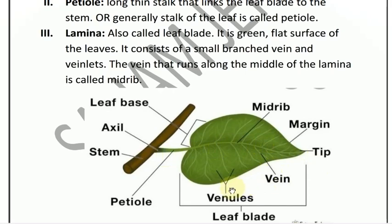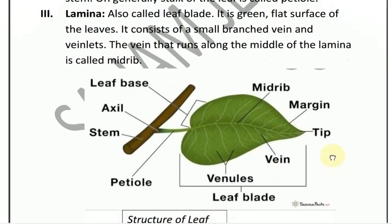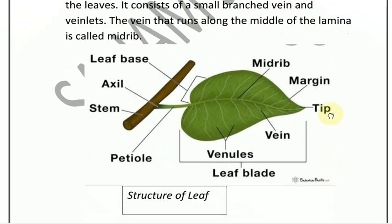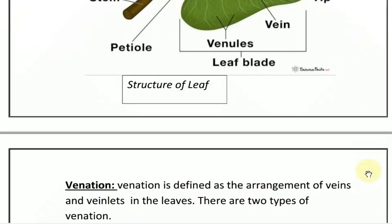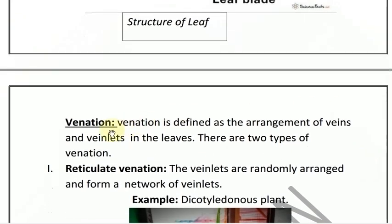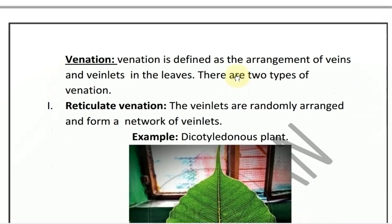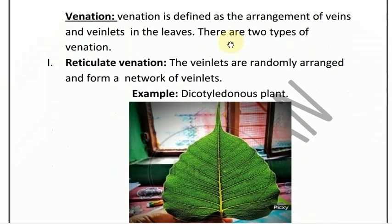See the general structure diagram of the leaf. Venation is defined as the arrangement of veins and venlets in the leaves. The veins or venlets arrange from the midrib. Generally venations are of two types: reticulate venation or parallel venation.